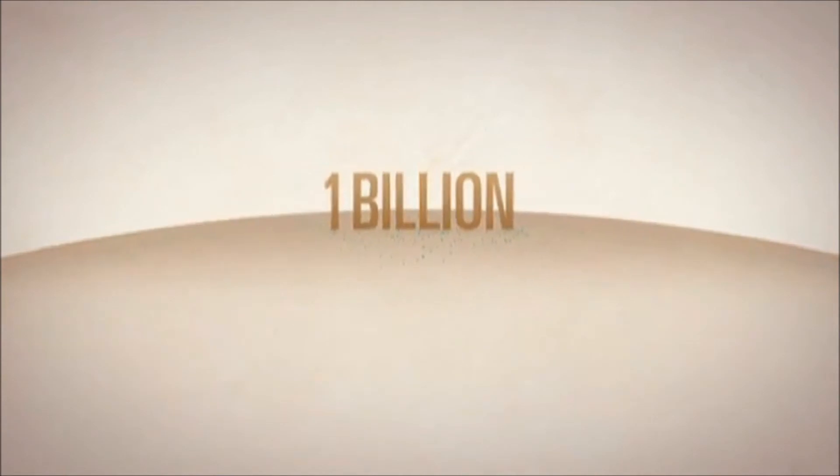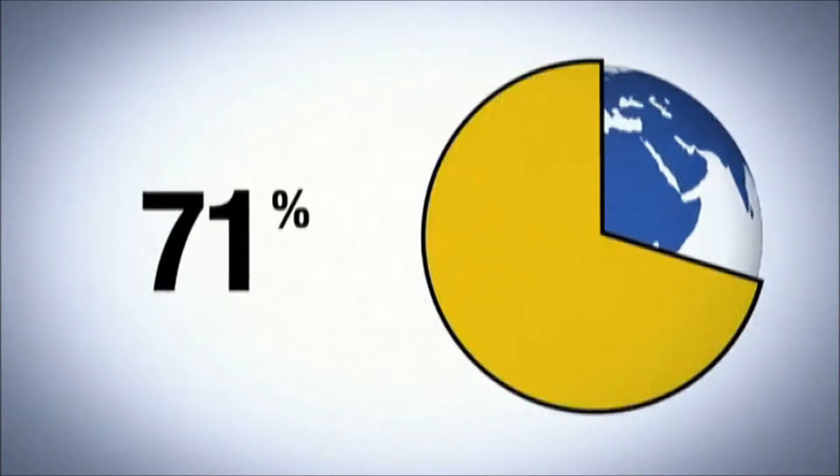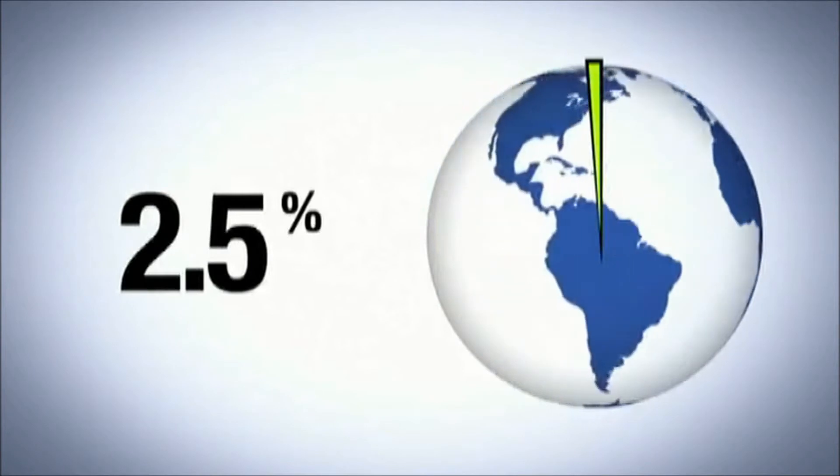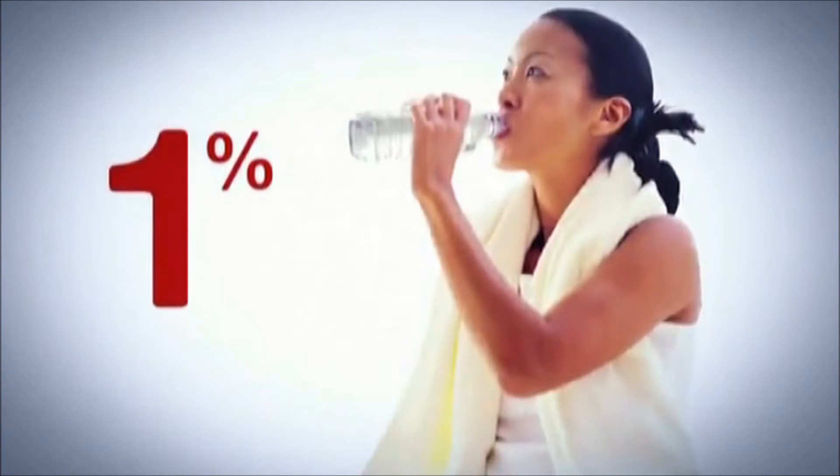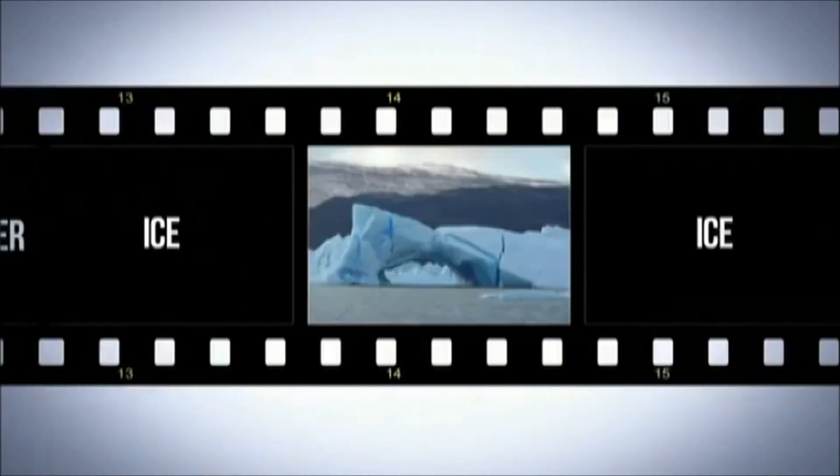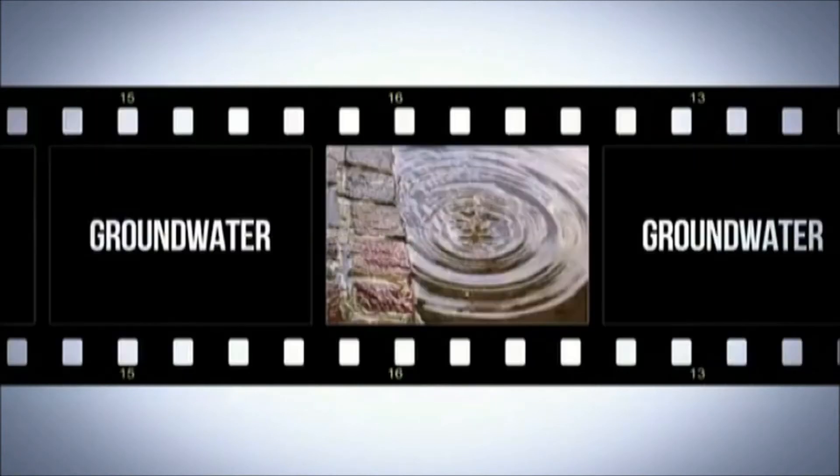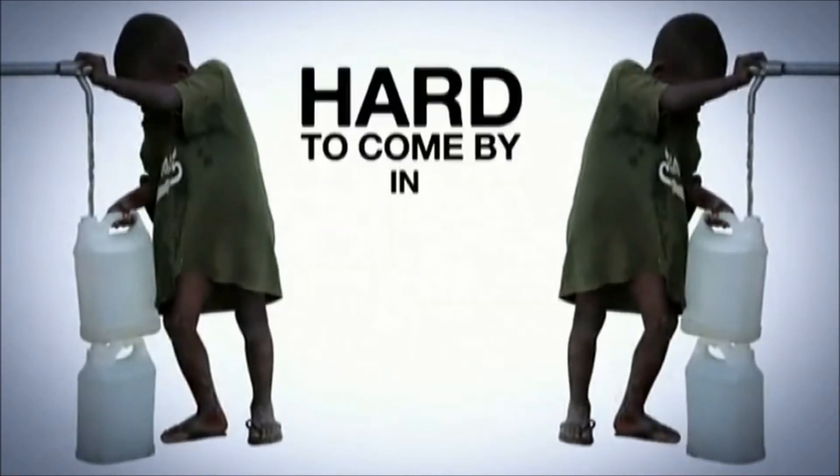Water may cover about 71% of the earth, but only 2.5% of that is fresh water, and only 1% of the world's fresh water supply is actually usable for drinking water. The rest is in the form of ice, permanent snow, or groundwater. This small supply makes fresh water hard to come by in many areas.